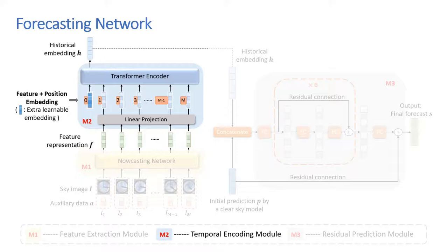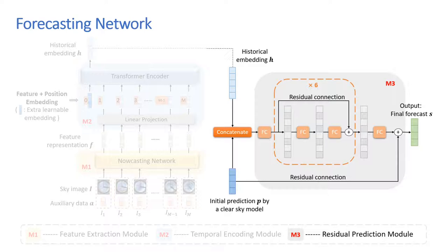After that, in the temporal encoding module, we again use the transformer encoder to encode the long-range spatial information and the temporal information in the video sequence into a historical embedding vector.